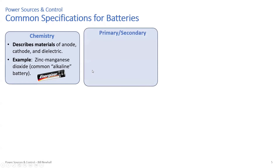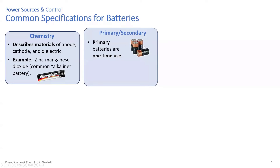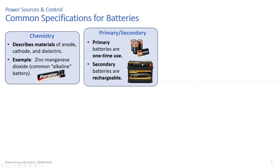Another specification is whether the battery is primary or secondary. A primary battery is a one-time-use battery — the ones you throw out when you're done. A secondary battery is a rechargeable battery — the battery in your car is a rechargeable battery.